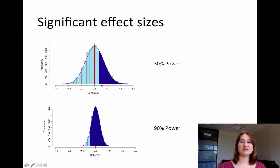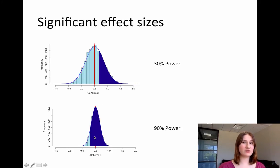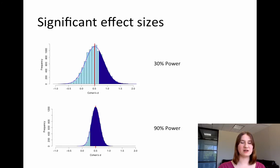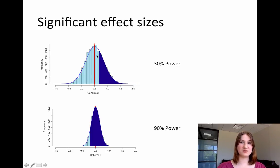This does two things. Effect sizes from underpowered studies, if statistically significant, are going to be greater than the true value. But it also tells us that if you average across all published effect sizes — assuming we're in a field where the vast majority are positive — the average effect size from a low-power distribution is going to be much greater than the true effect size, whereas with 90% power the average published effect size will be much closer to the true value.